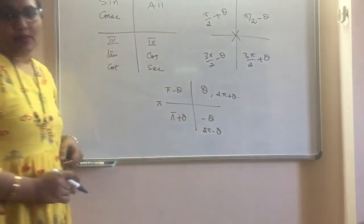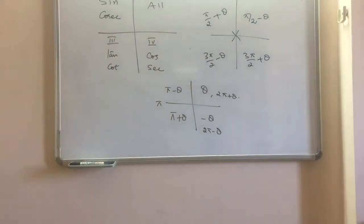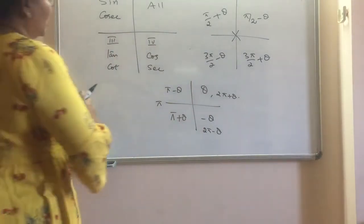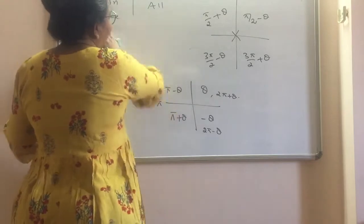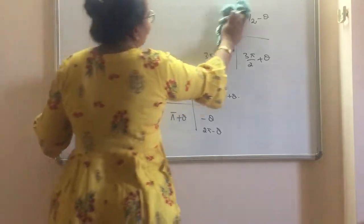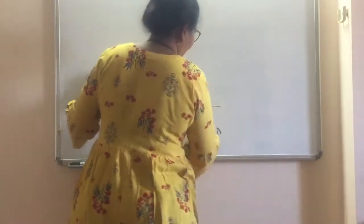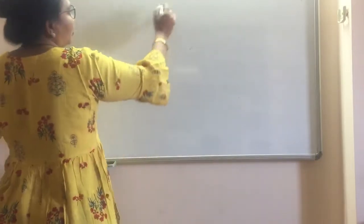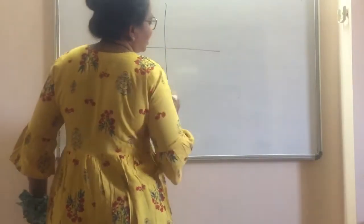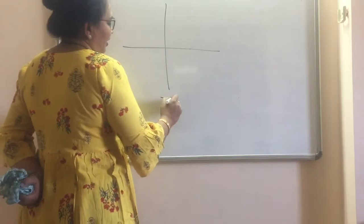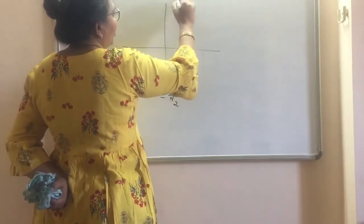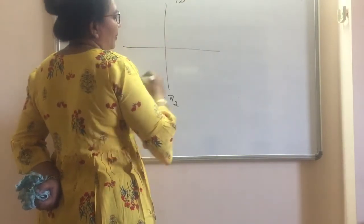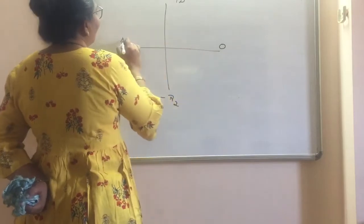So this is what we have done last year. As I discussed about the restricted domain, you must have gone through the restricted domain also. Minus pi by 2 to pi by 2 for sine, and for cos 0 to pi.